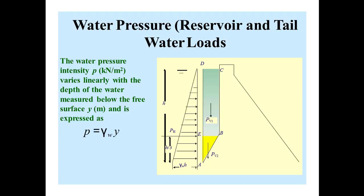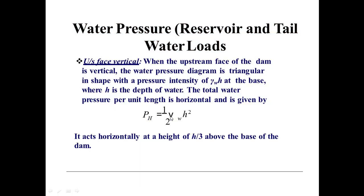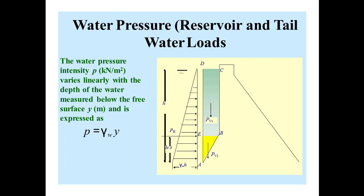As you can see, the total pressure intensity at the base is γw × h, where h is the total height of this water. The total water pressure per unit length is horizontal and is given by pH = ½ × γw × h². Here h is the height and γw is the unit weight of the liquid.